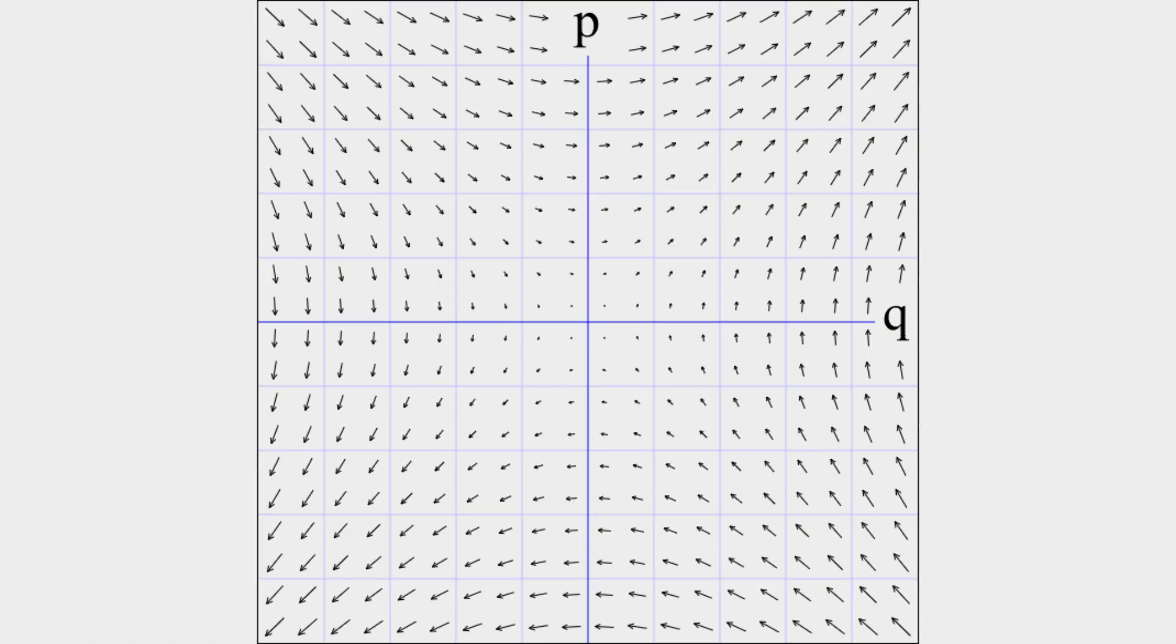Now, it might seem complicated, but remember momentum is tied to the changing coordinate. So the higher vertically, the stronger to the right the vector points, and the lower vertically, the stronger to the left.